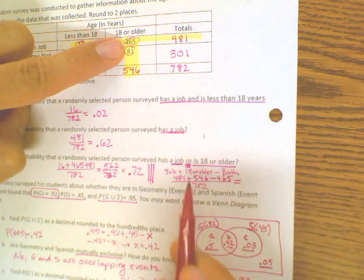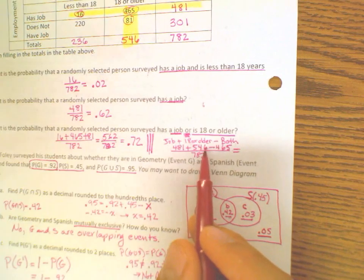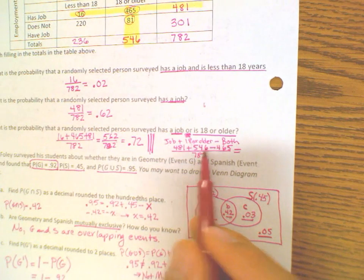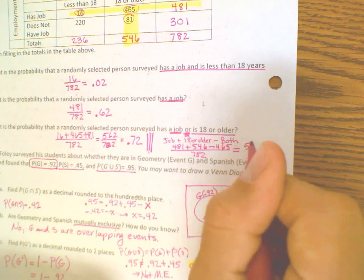If you added those three numbers on top, 481 plus 546 minus 465, that'll still give you 562.